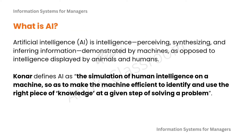What is artificial intelligence, or AI? Artificial intelligence is intelligence — the perceiving, synthesizing, and inferring of information as demonstrated by machines, as opposed to the intelligence displayed by animals and humans. According to Konar, AI is defined as the simulation of human intelligence on a machine so as to make the machine efficient to identify and use the right piece of knowledge at a given step of solving a problem.